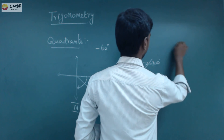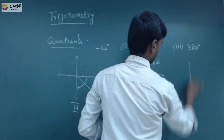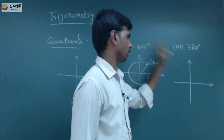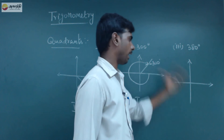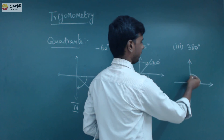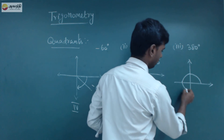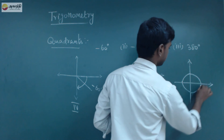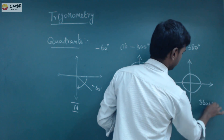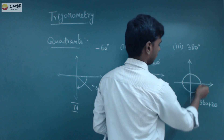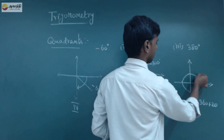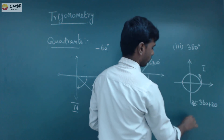Now, 380 degrees. 380 degrees — which quadrant is it in? The sign is positive, so we go in the anti-clockwise direction: 0, then 90, then 180, then 270, then 360. After 360 degrees we have 20 degrees remaining. So 360 plus 20 equals 380. This means 380 degrees lands at the 20-degree position, which is in the first quadrant.